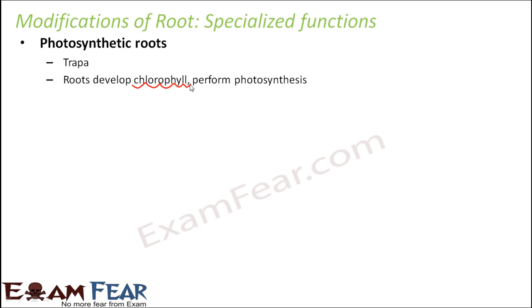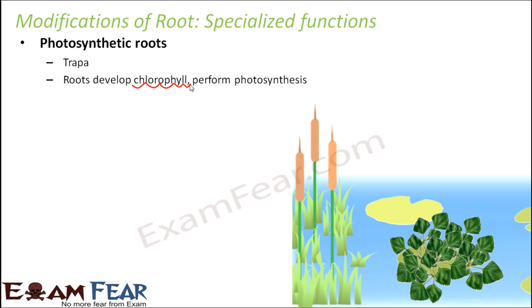In trappa plants, the roots develop chlorophyll. Chlorophyll is essential for photosynthesis to happen — that's why leaves perform photosynthesis, because they have the green pigment chlorophyll. The roots of trappa have chlorophyll and are therefore capable of performing photosynthesis. These roots are present above the ground, are green in color due to chlorophyll, and perform photosynthesis — an additional, exceptional function for roots.